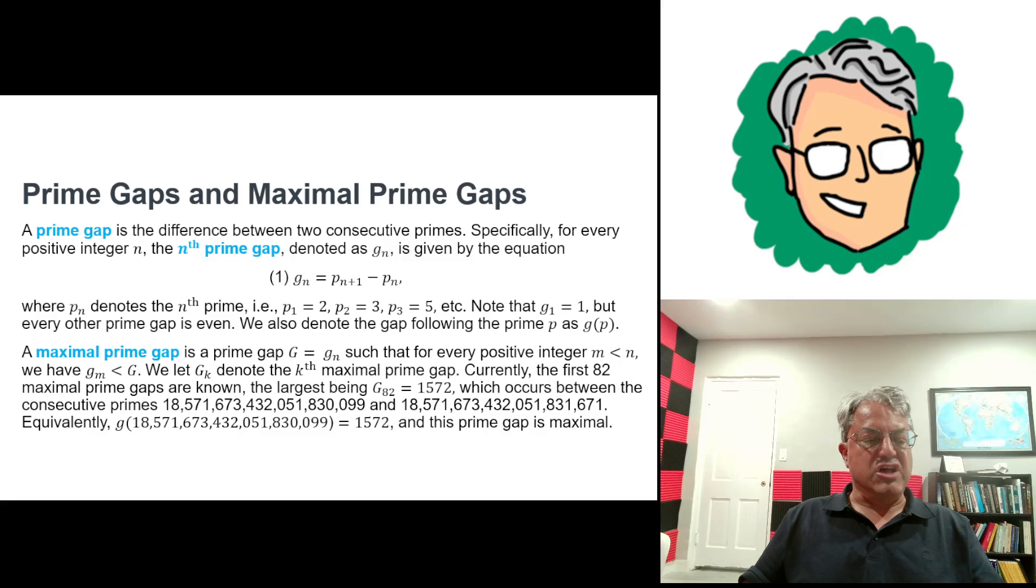Obviously, the first maximal prime gap is just 1. That's the prime after 2. Next one is 2, which is the gap after 3. Those aren't very interesting. But then the first gap of size 4 would be after 7. So that's another maximal gap. The next one's after 23. You have a gap of size 6. And then you have to get up to 89 to get a gap of size 8. You actually get a gap of size 14 when p is 113 because there's no primes between 113 and 127. Anyway, I'll go into this a little bit more later.